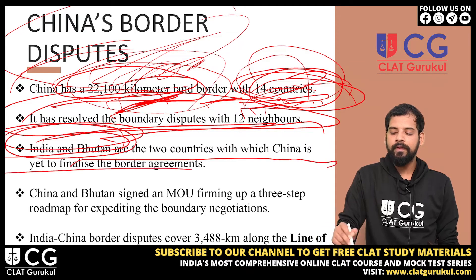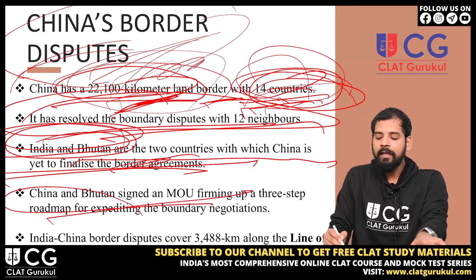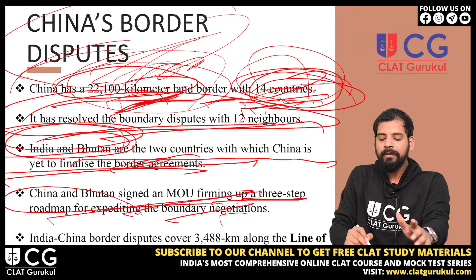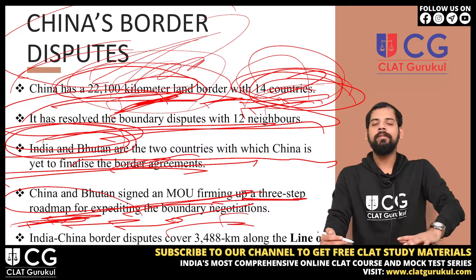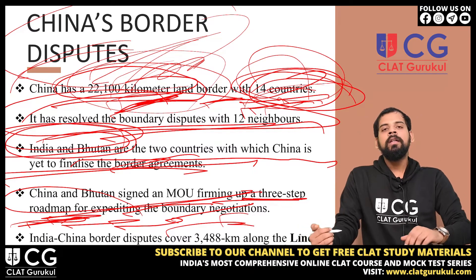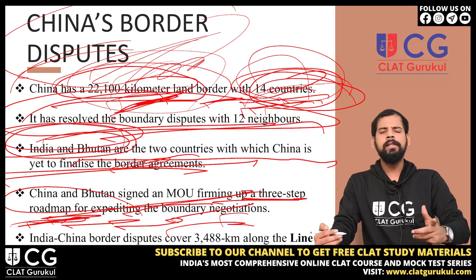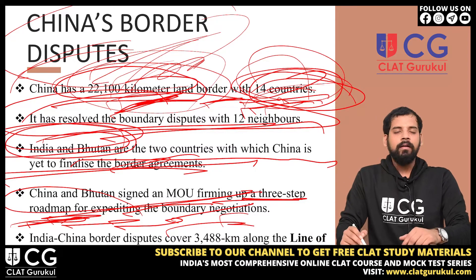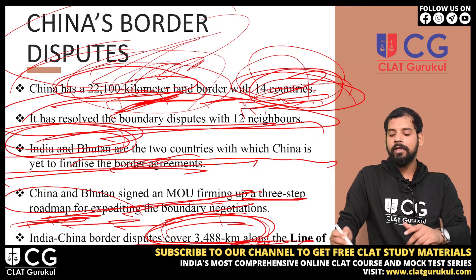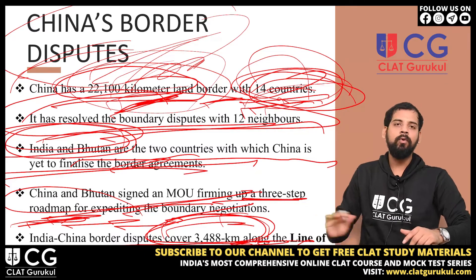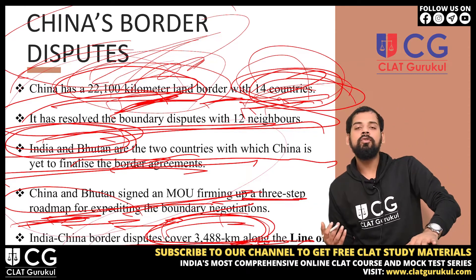The two remaining countries with which China is yet to finalize border agreements are India and Bhutan. China and Bhutan signed an MOU — a Memorandum of Understanding — forming a three-step road map for expediting the boundary negotiations. As per the India-China border dispute, it covers 3,488 kilometers along the Line of Actual Control, and the China-Bhutan dispute covers about 400 kilometers.